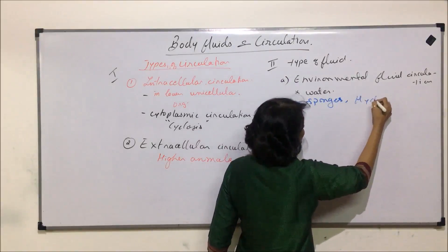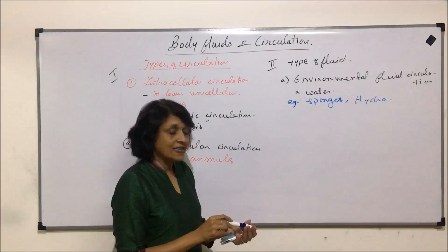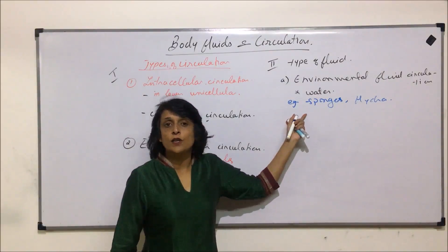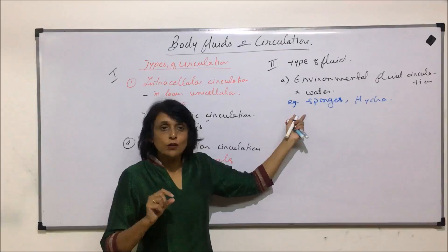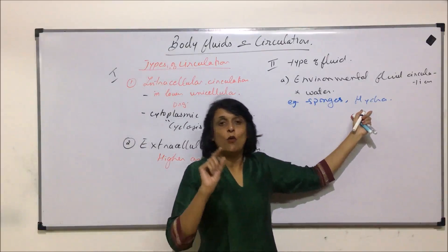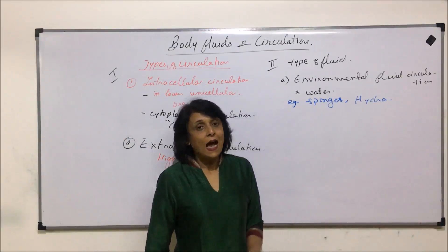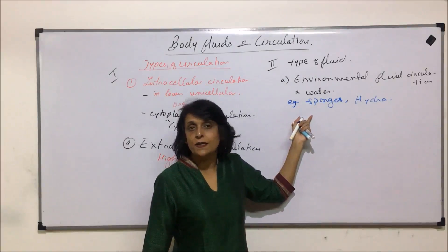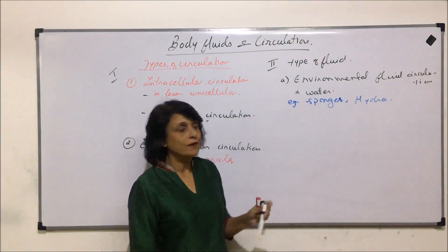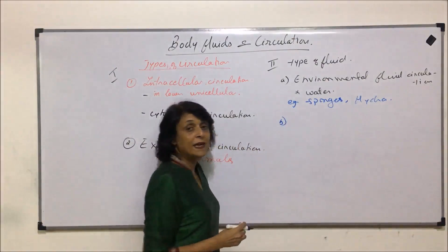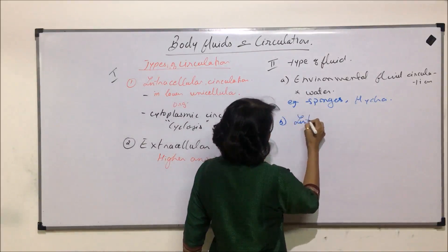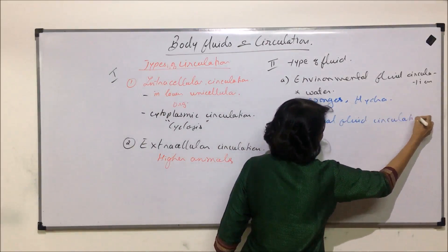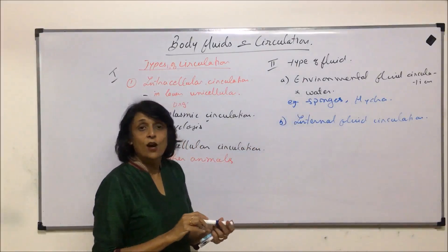Environmental fluid circulation is seen in case of sponges and hydra. The respiratory gases come in through water, and food also comes in through the same water. In sponges there are tiny pores all over the body; in case of hydra there is only one opening which acts as both inlet and outlet. So here there is an external fluid supplying respiratory gases as well as nourishment.